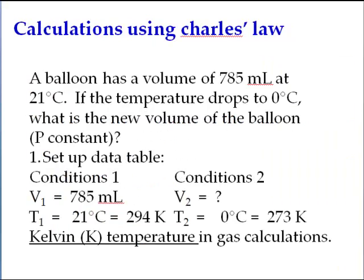So here let's try to do a mathematical problem using Charles' Law. A balloon has a volume of 785 mL at the temperature 21 Celsius. If the temperature drops to 0 degrees Celsius, what is the new volume of the balloon? P is constant. Always pay attention to what is constant to relate to which law to apply.